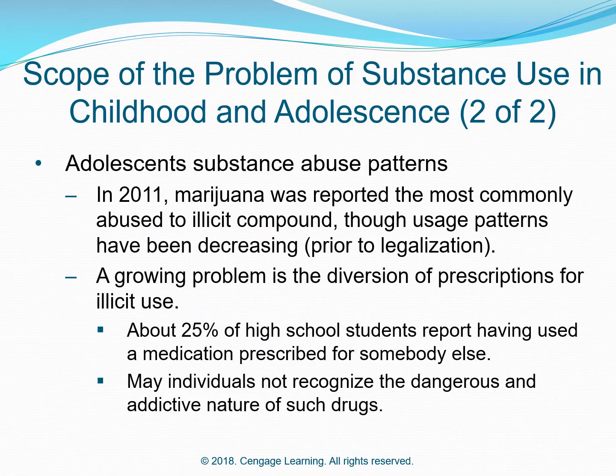Adult Substance Abuse Patterns: In 2011, marijuana was reported the most commonly abused illicit compound, though usage patterns had been decreasing prior to legalization. A growing problem is the diversion of prescriptions and illicit use. About 25% of high school students reported having used a medication prescribed for somebody else. Many individuals do not recognize the dangers and addictive nature of such drugs.